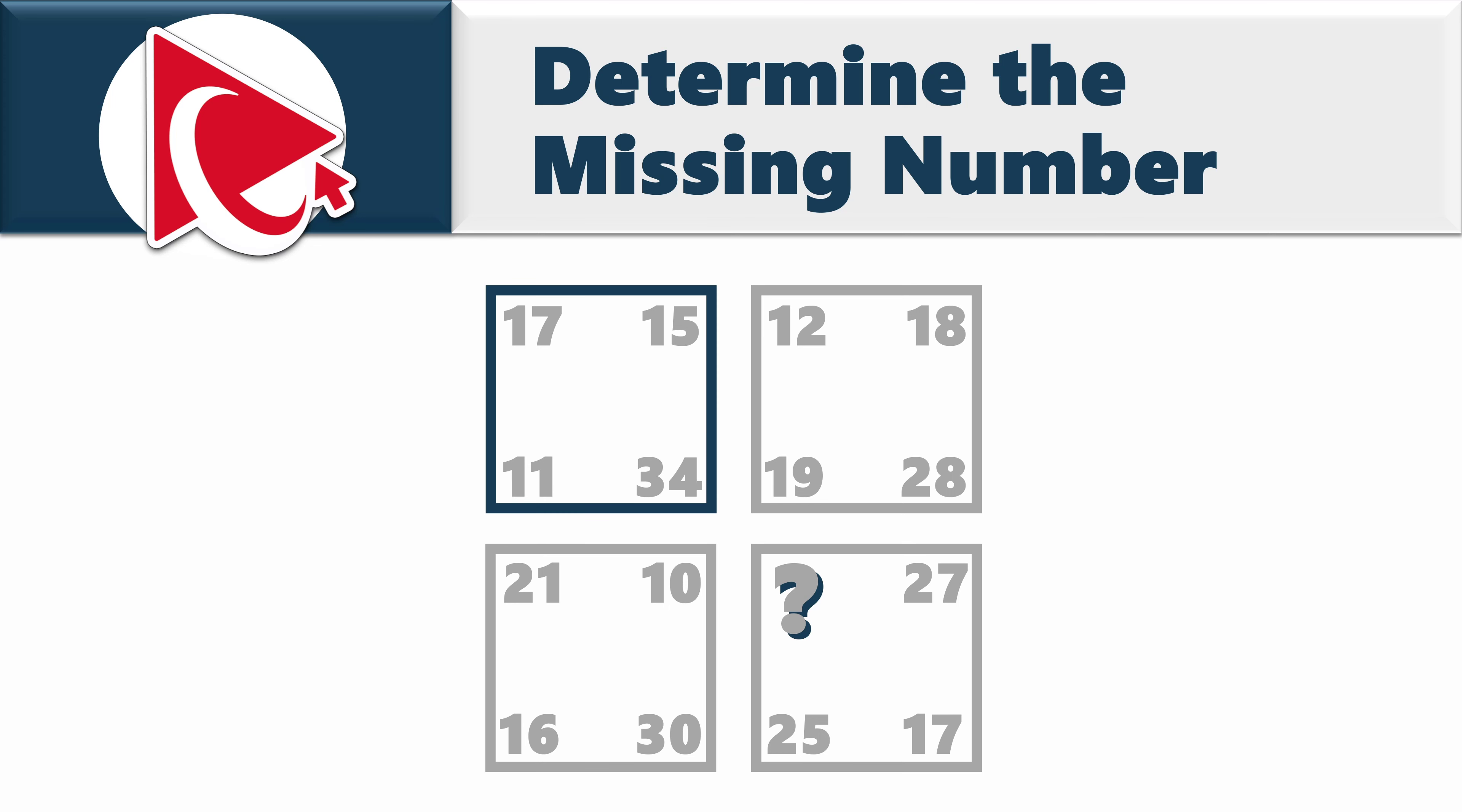The first square has numbers 17, 15, 34, and 11. The second square has numbers 12, 18, 28, and 19. The third square has numbers 21, 10, 30, and 16. And then comes the fourth square, which has numbers 27, 17, 25, and then comes the missing number.